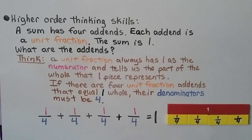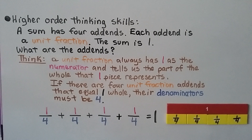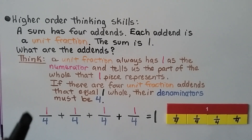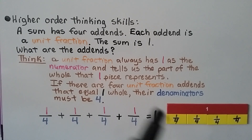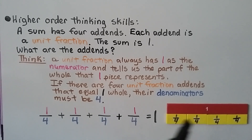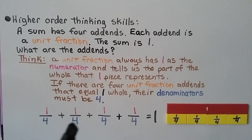Higher order thinking: A sum has four addends. Each addend is a unit fraction and the sum is one. What are the addends? A unit fraction always has one as the numerator. If there are four unit fraction addends that equal one whole, their denominators must be four. One-fourth plus one-fourth plus one-fourth plus one-fourth equals four-fourths, which equals one whole.